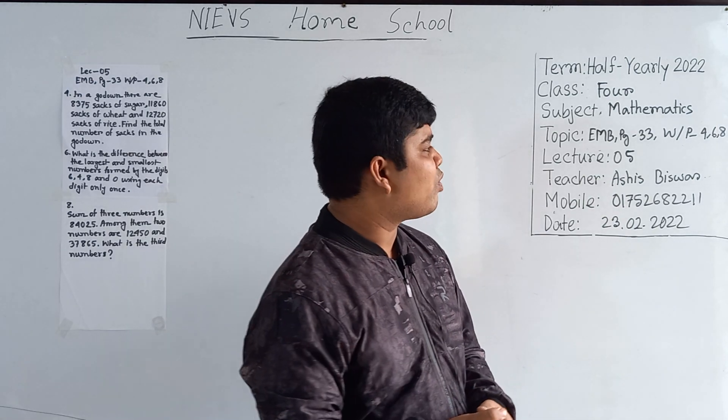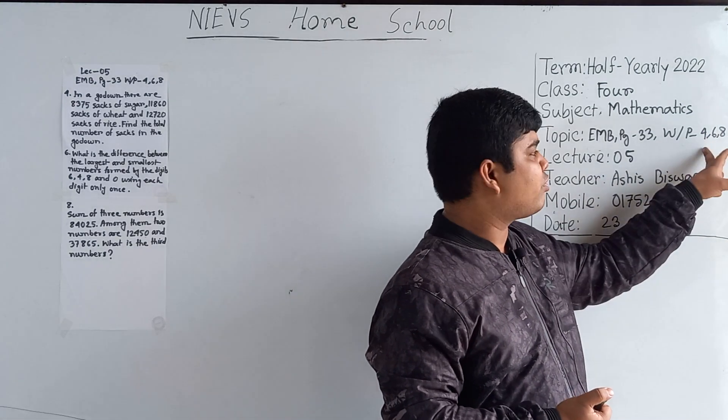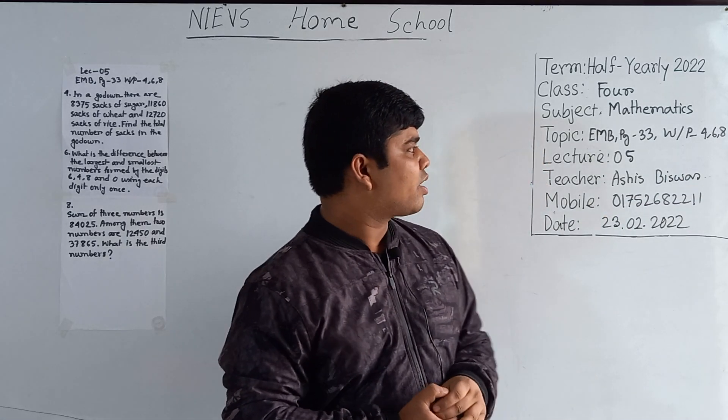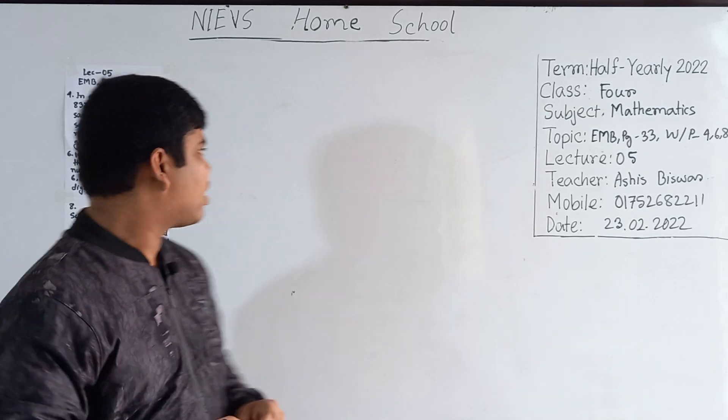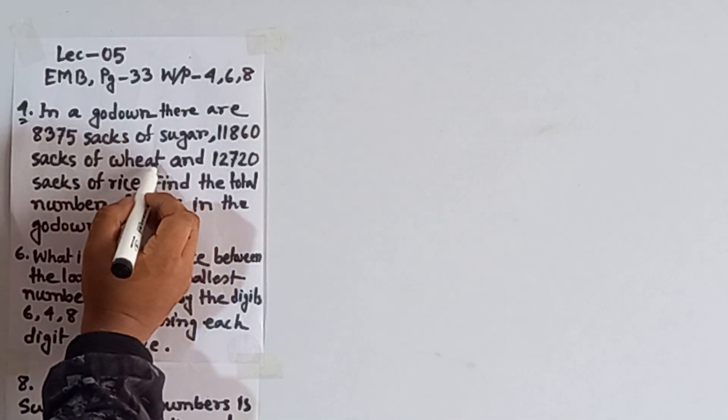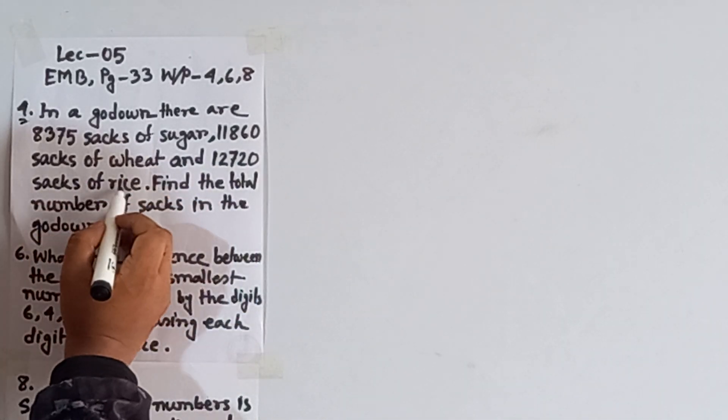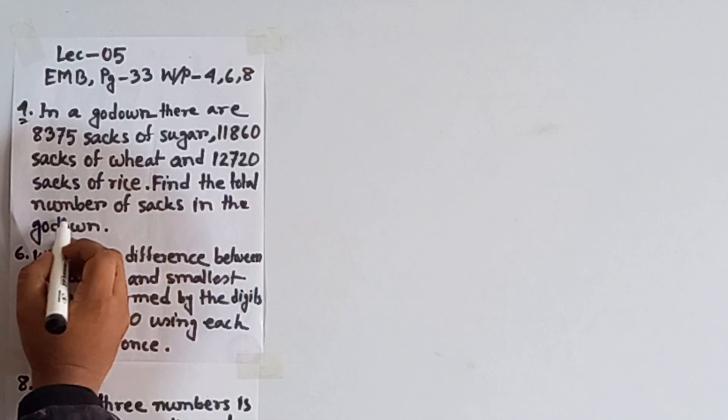Today's topic is from your EMB book, page number 33. We shall solve odd problems — problem number 4, 6, and 8. Let us start our class. These are the questions: 4, 6, and 8. I have written them. Now, question number 4: in a go-down there are 8,375 sacks of sugar, 11,860 sacks of wheat, and 12,720 sacks of rice.